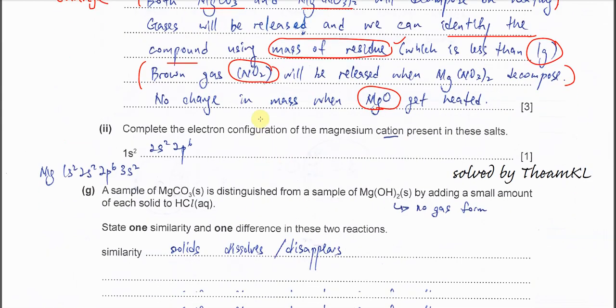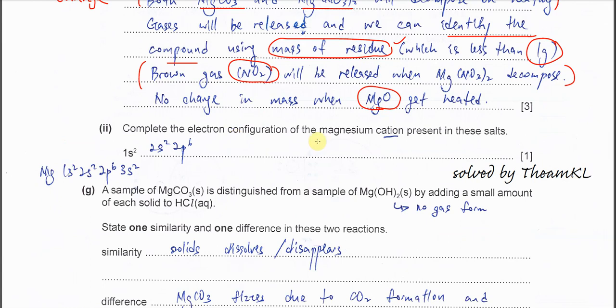Part two: Complete the electron configuration of the magnesium cation present in this salt. First you need to know, magnesium itself is 1s2 2s2 2p6 3s2. And it's a magnesium cation, so the valence electrons will be removed. So the 3s2, gone. Then it will just form 1s2 2s2 2p6. That's the answer.